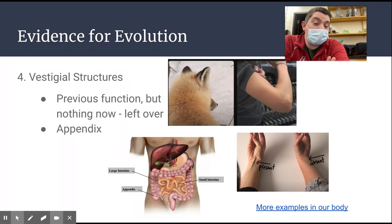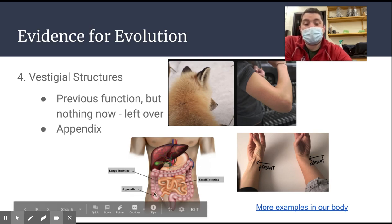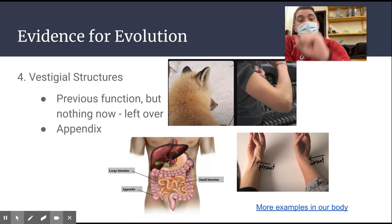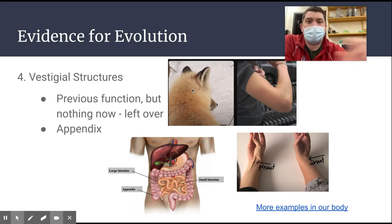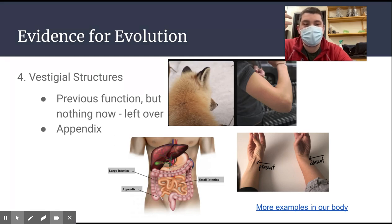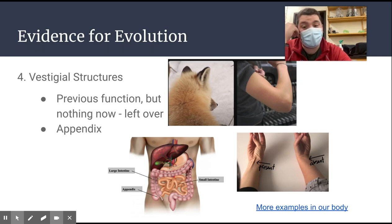Another vestigial structure is goosebumps on our arms. When it's really cold or you get scared, your hair sticks up — that's a vestigial function from our mammal ancestors. When it's cold or they get worked up, their hair stands straight up, helping trap a warm blanket of air over them. You might see a deer, dog, coyote, or fox with puffy hair in winter to stay warm, or a pet whose hair stands up when excited or afraid. Vestigial structures like these are ones we no longer use, but they're still present in us.